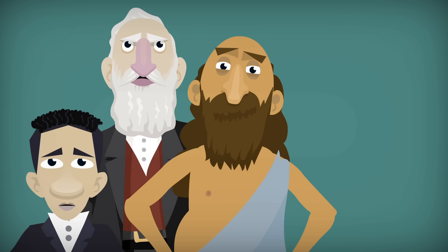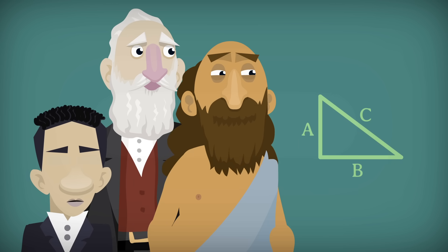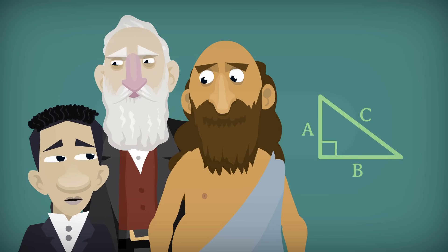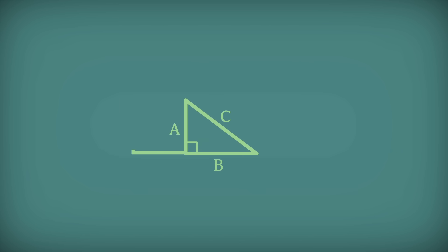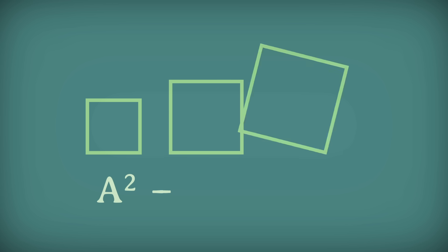They all came up with elegant proofs for the famous Pythagorean Theorem, the rule that says for a right triangle, the square of one side plus the square of the other side is equal to the square of the hypotenuse. In other words, a squared plus b squared equals c squared.